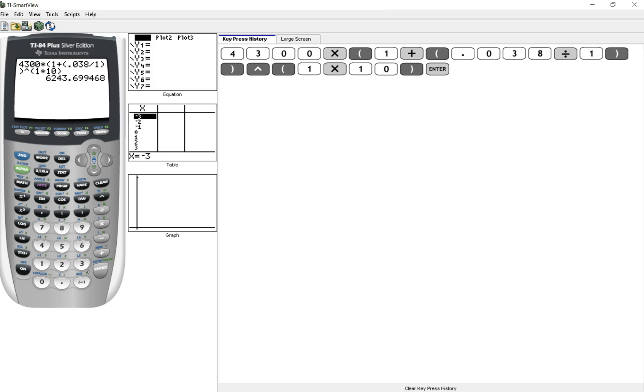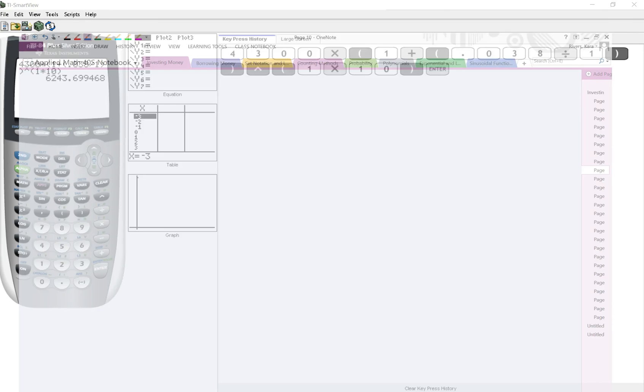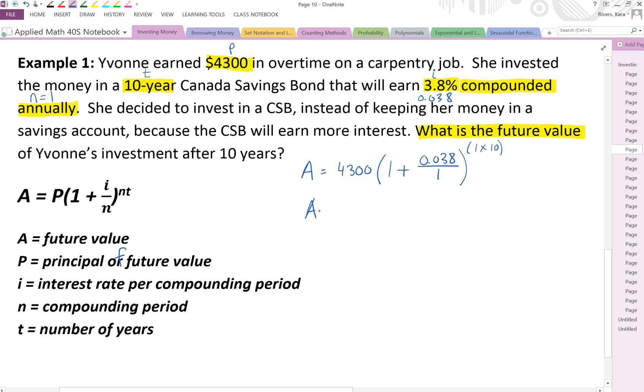Enter and you get a future value of $6,243 and then rounding that would be 70 cents because money we're always rounding to two decimal places. Now if you want to break this up into steps that's okay. Do it in pieces but you want to leave as many decimal places as you can. You don't want to round before the very end. So that's why it's nice to be able to put this in your calculator in one shot.